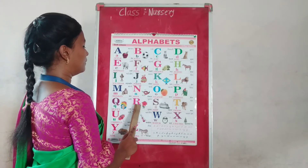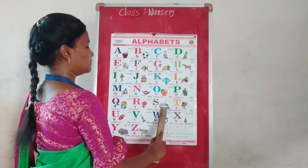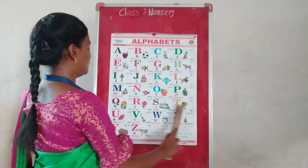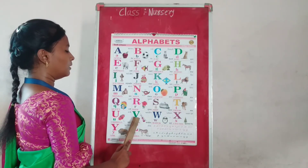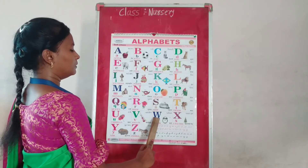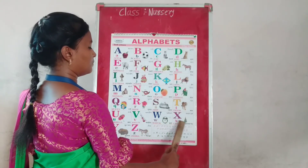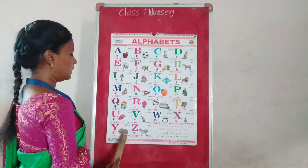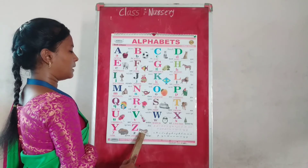R for Rose, X for Ships, Y for Yard, Z for Zebra.